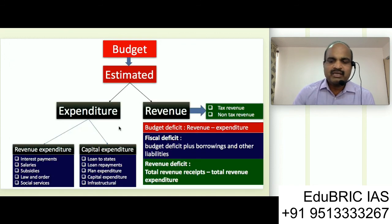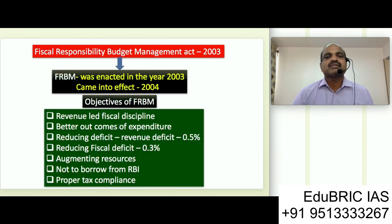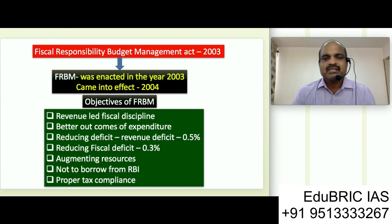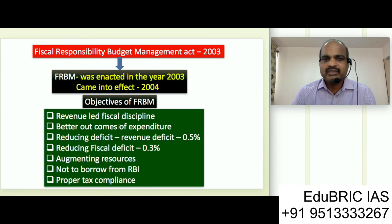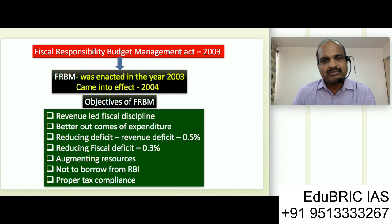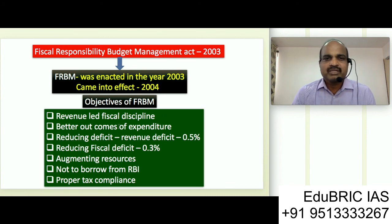To conclude, the Fiscal Responsibility and Budget Management Act 2003 is basically to ensure revenue-led fiscal discipline and better outcomes on expenditure. Later on, a committee was appointed and many latest suggestions have come. In my next video, I will cover a small concept in Indian economy and Indian economy related current affairs. Please subscribe. Thank you so much, have a nice day.